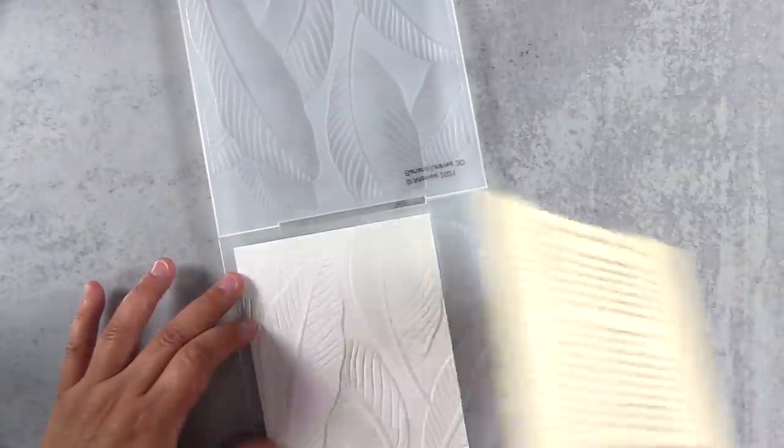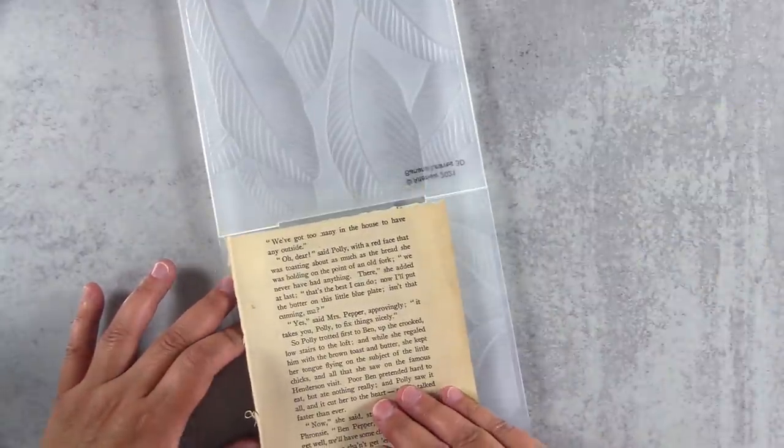Here I'm just placing the embossed paper back into the folder and it kind of snaps into place because the 3D embossing is pretty deep, has pretty deep grooves and I'll run this through the die cut machine again.